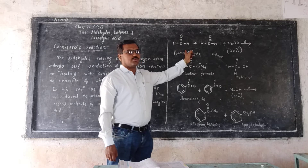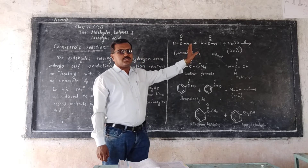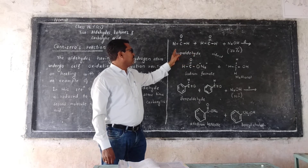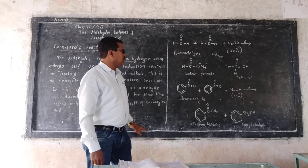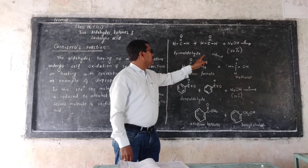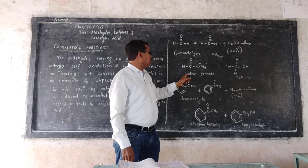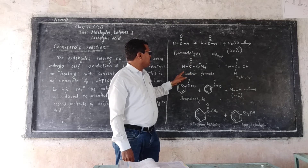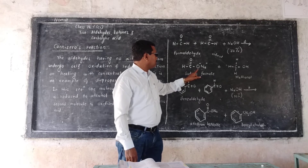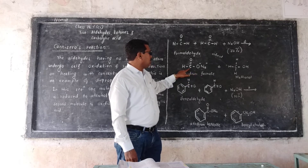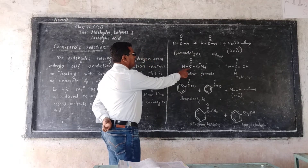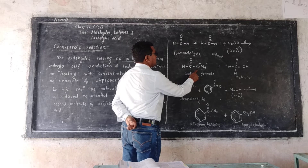Two molecules of carboxylic acid: one molecule of aldehyde is reduced to alcohol and another molecule of aldehyde is oxidized to the sodium salt of carboxylic acid, that is sodium formate. Here, addition of oxygen means oxidation takes place.